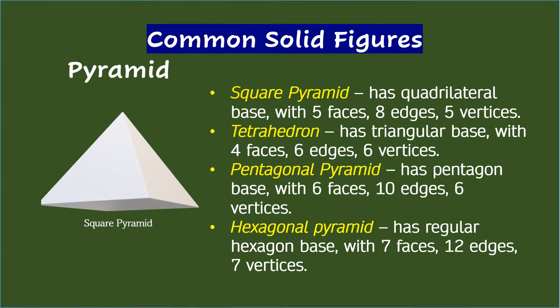Still on pyramid — there is a square pyramid, which has a quadrilateral base, a square base to be exact. A square pyramid has five faces, eight edges, and five vertices. A tetrahedron is another pyramid that has a triangular base with four faces, six edges, and six vertices.